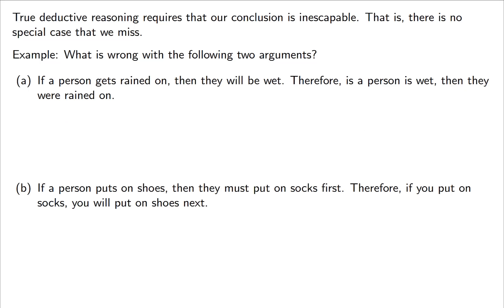At times you can have a conclusion that's actually not true — we need to think about this carefully. When we're talking about logic, we assume the first statement is true, and the 'therefore' is what we're really examining. Example: if a person gets rained on, then they will be wet — we assume that's true. Therefore, if a person is wet, then they were rained on. All I've done is switch the order of the statement. You can quickly see that is not true — a person could be wet for many reasons. This is what we call the converse, and the converse is not always true.